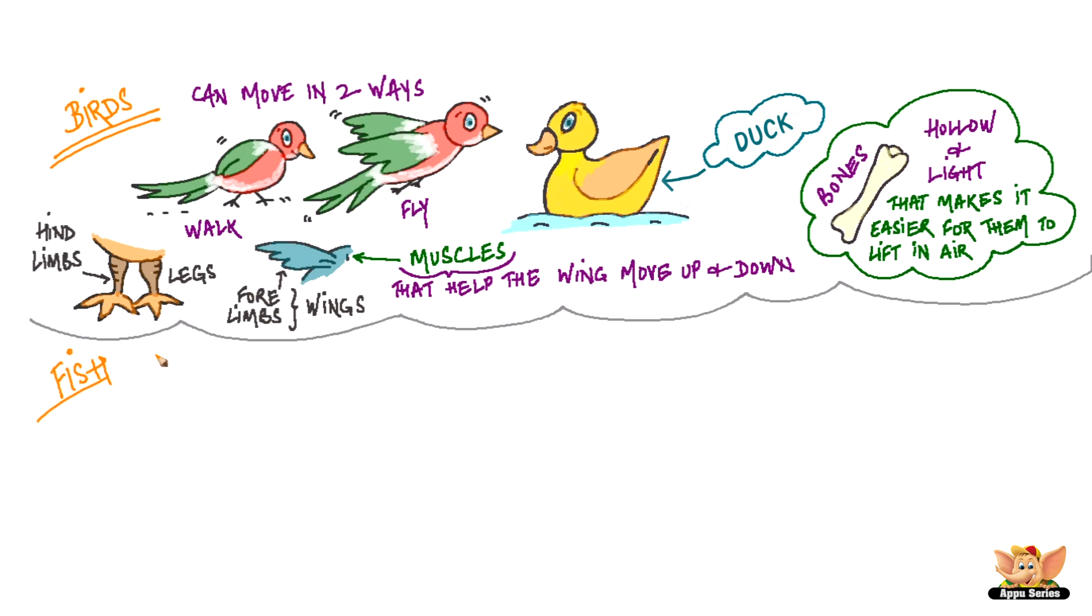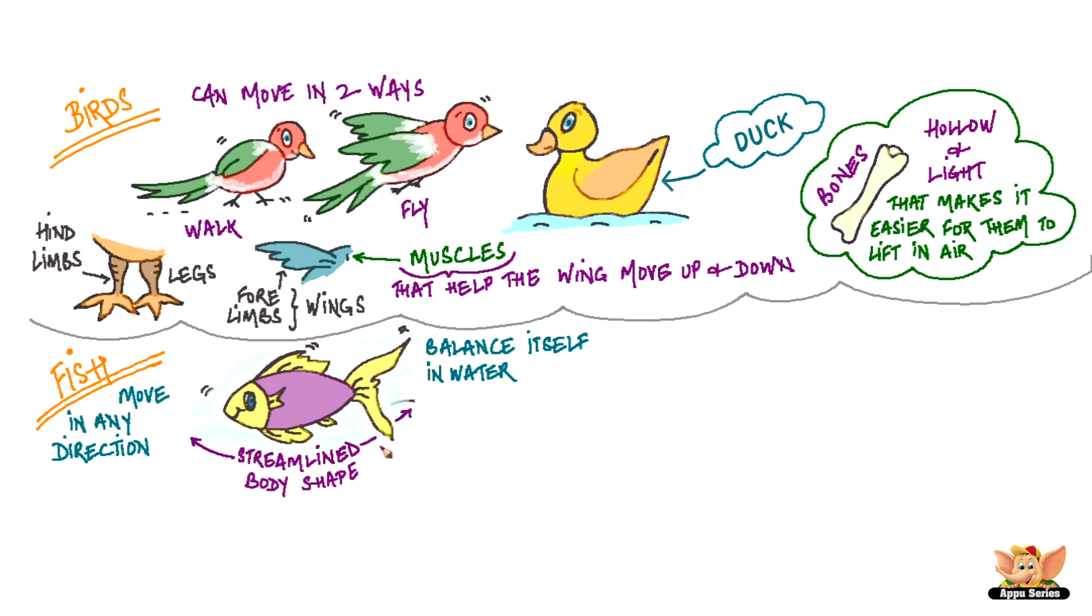Now let's talk about the fish. A fish can balance itself in water and can move in many directions. It has a streamlined body shape. This means that its body tapers at both ends. This allows water to flow around it smoothly making it easier for the fish to pass through water.